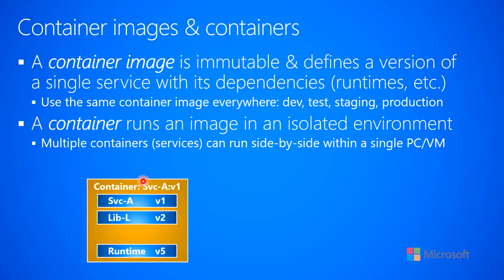Let me show some graphic images to help make this clearer. Let's say I want to create a container image for Service A, version one. That requires the Service A v1 code, which might have a dependency on a library — let's call it Library L version two — and maybe it requires a runtime like a Java VM or .NET common language runtime at version five. We build all of this into a container image, and then we can create an instance of it and start it running.